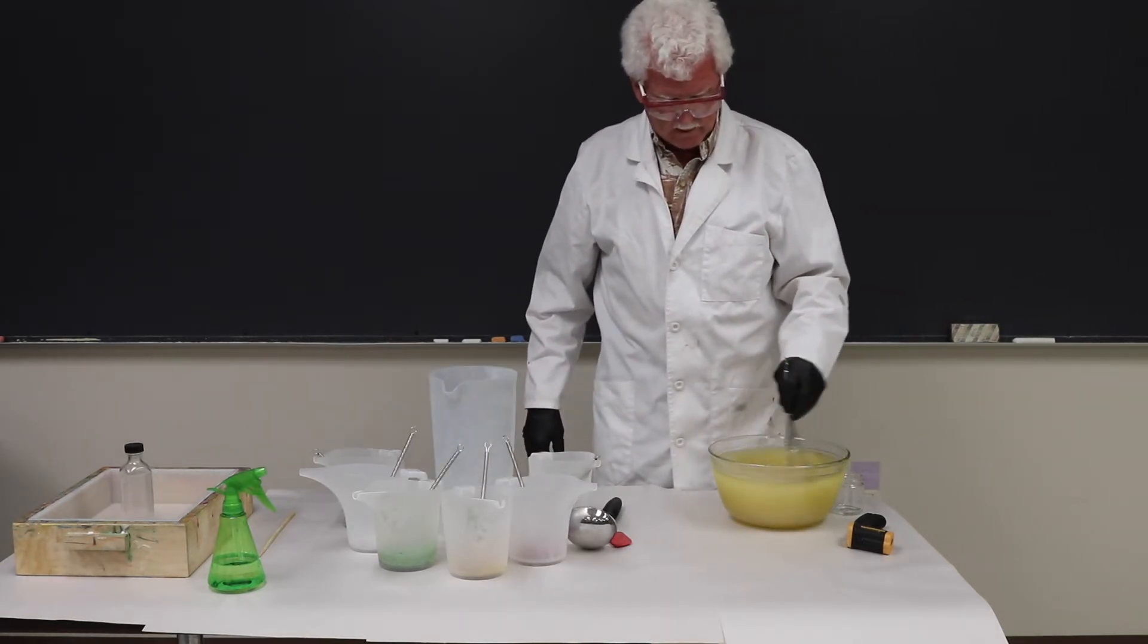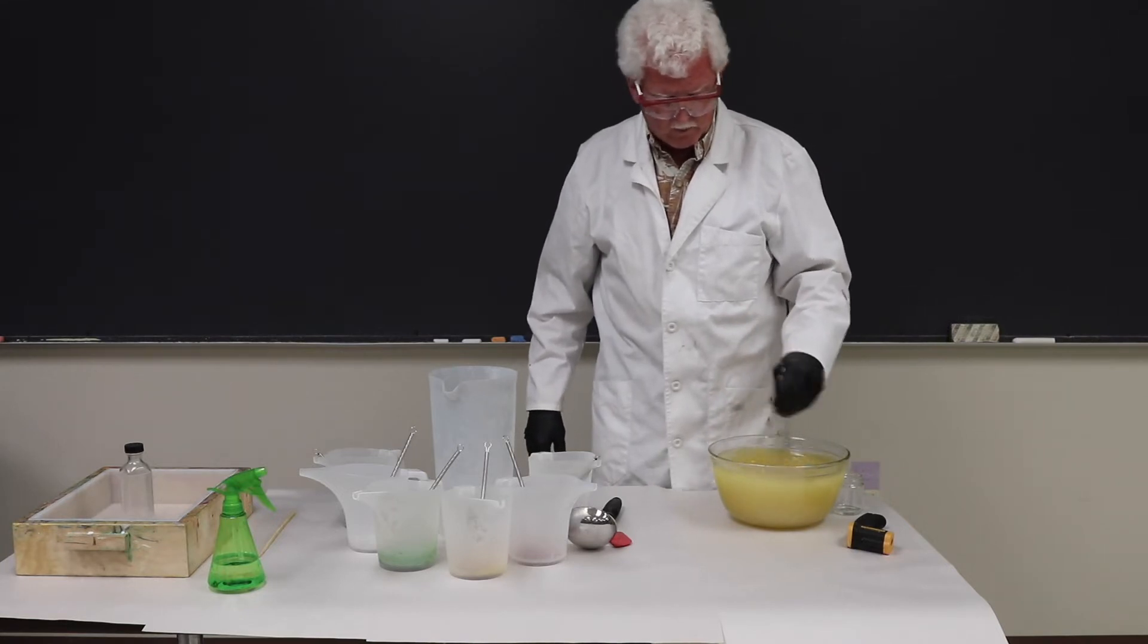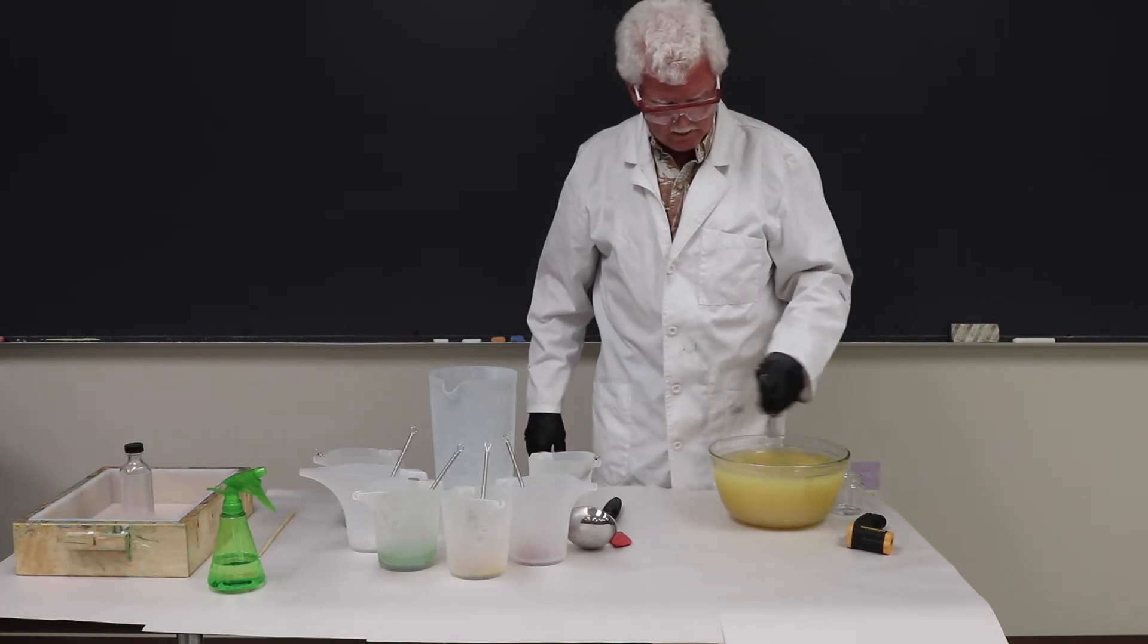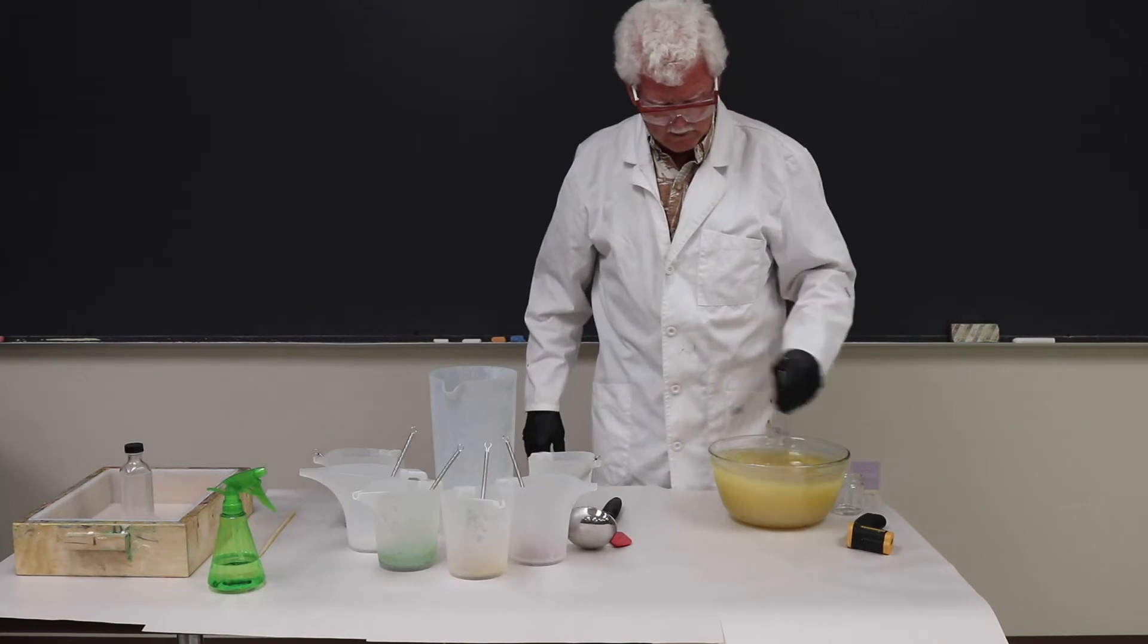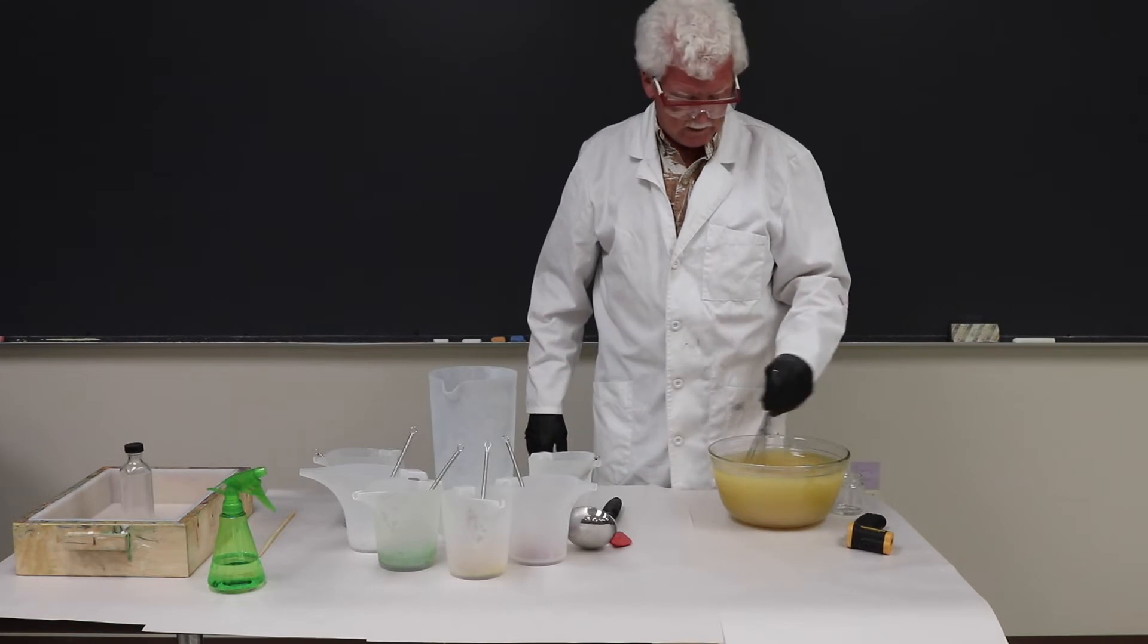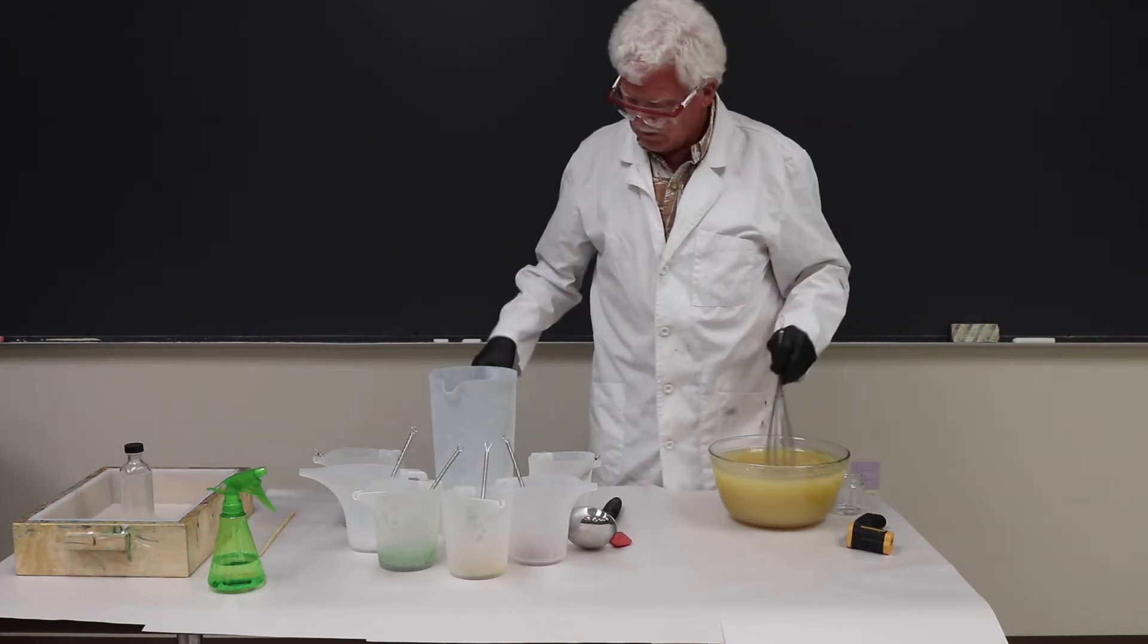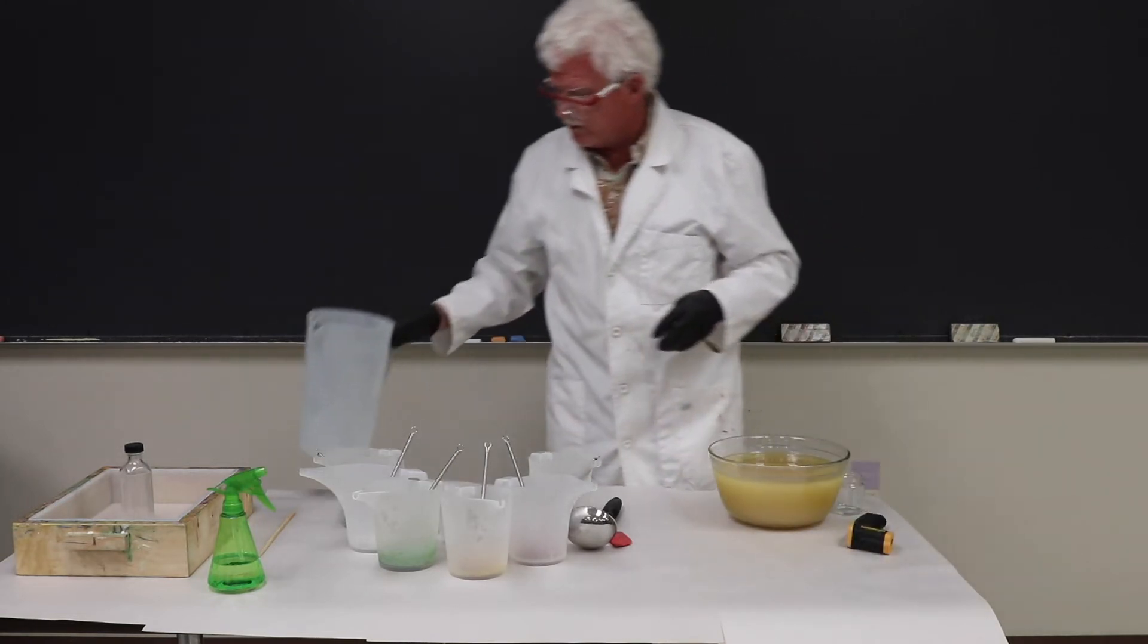As always, if this takes a long time I will speed up or edit out parts of the video so you don't have to watch all the stirring. For a column pour, I'm hoping this will be a fairly slow moving soap. That's nicely emulsified, so I'm going to distribute it to the colors.